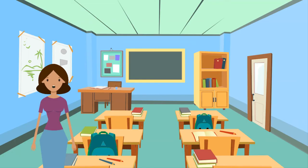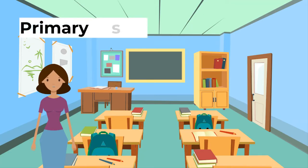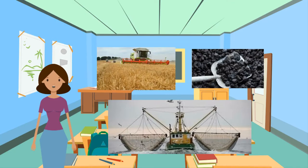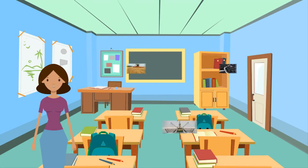Let's look at the primary, secondary and tertiary sector. Businesses can be classified into three sectors. First, the primary sector — this involves the use and extraction of natural resources. Examples include agricultural activities, mining, fishing, wood cutting and oil drilling.